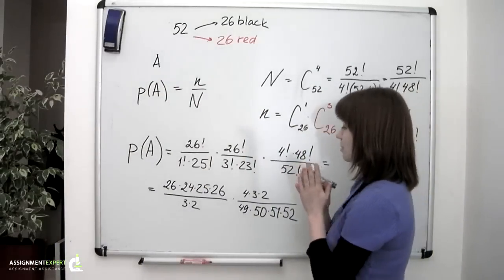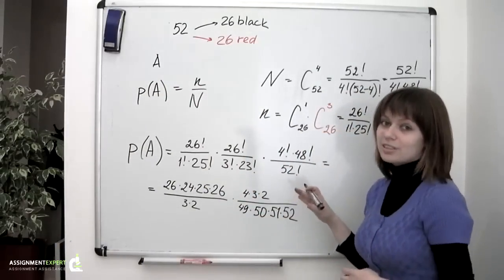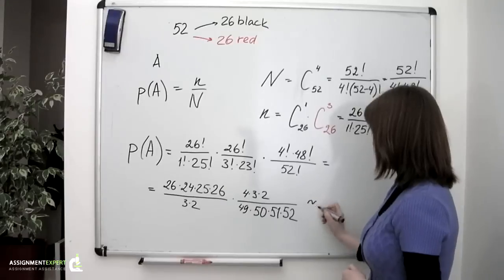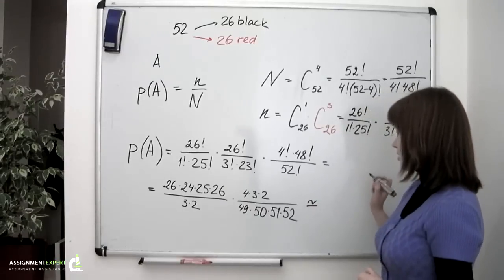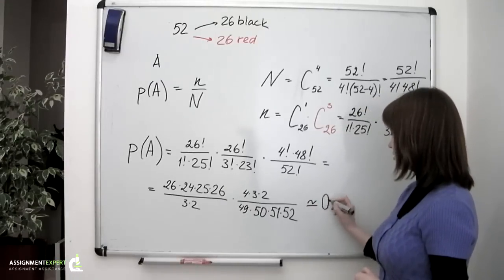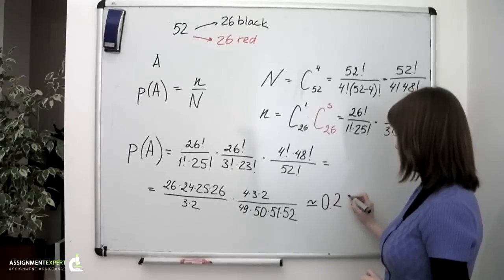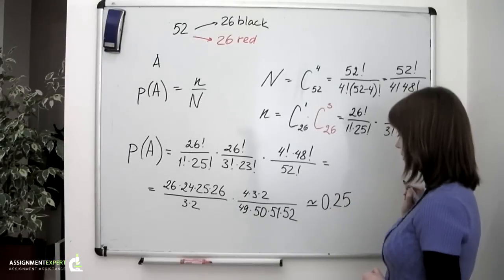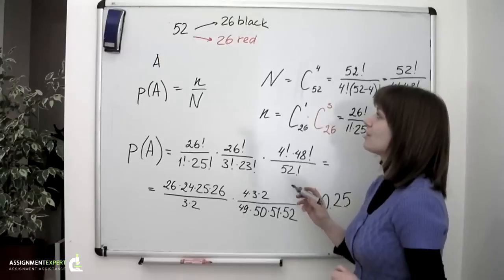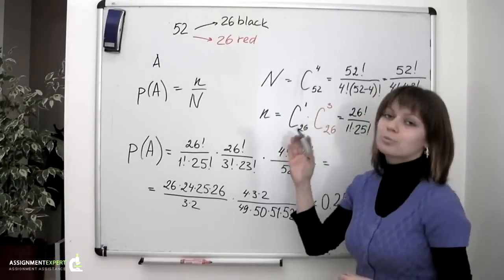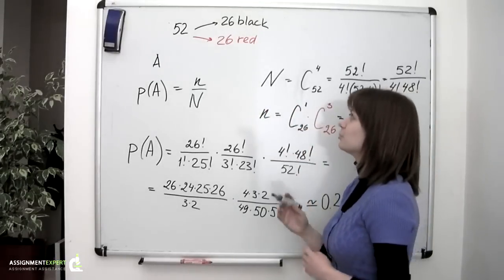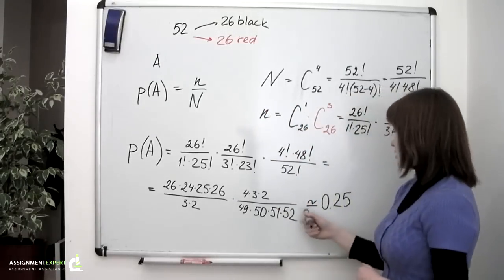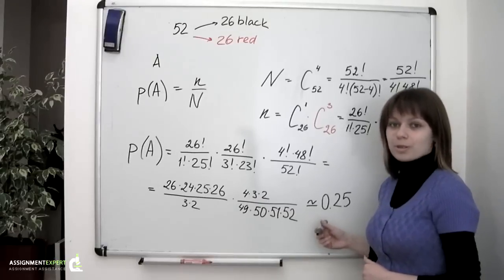And I have already estimated this expression using my calculator. And what I obtained is approximately 0.25. So the probability of picking 4 cards out of which 1 will be a black card and 3 will be red cards is approximately equal to 0.25.